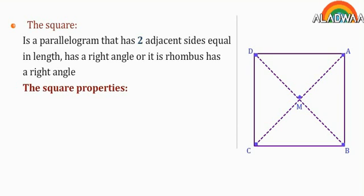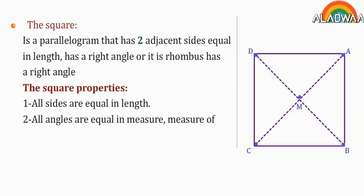The square properties. Number 1: All sides are equal in length. Number 2: All angles are equal in measure. Measure of each of them is 90 degrees.